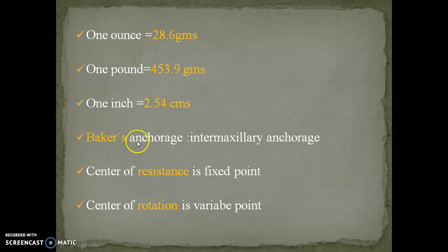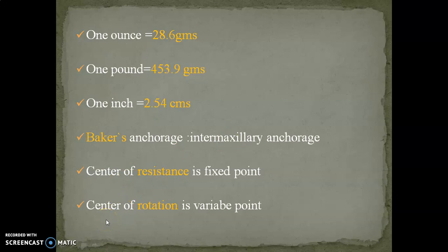Baker's anchorage is an example of reciprocal anchorage — it is intermaxillary anchorage. For class II malocclusion correction, elastics are worn from lower molars to upper anteriors. For class III malocclusion correction, elastics are worn from upper molars to lower anteriors. Remember, the center of resistance is a fixed point and the center of rotation is a variable point.